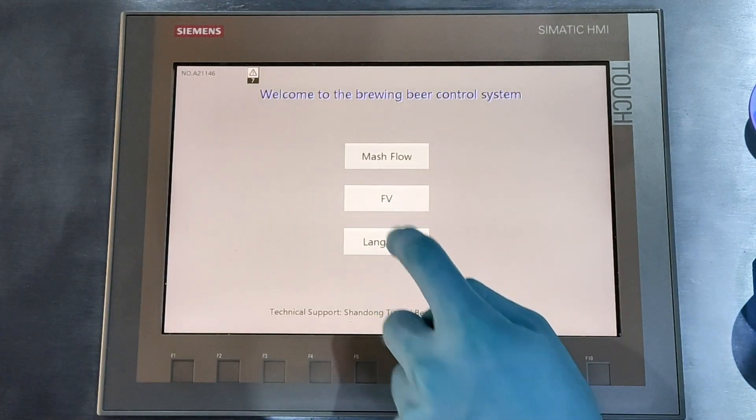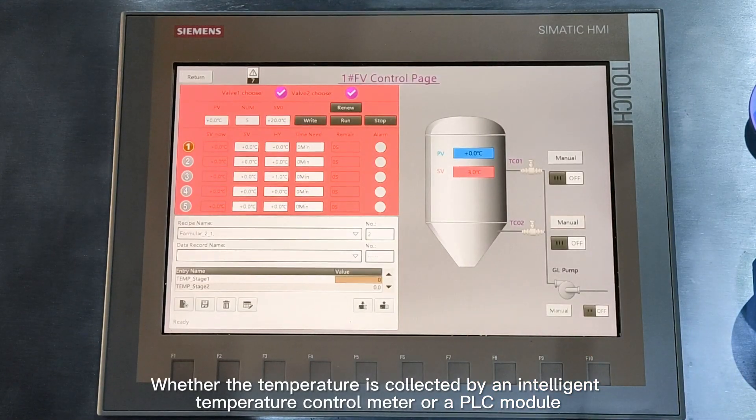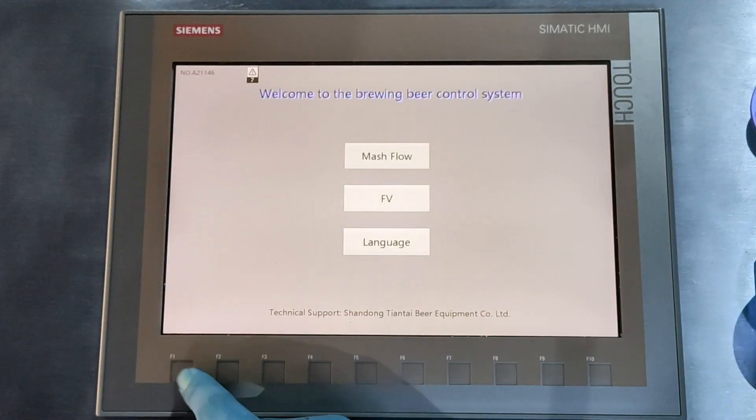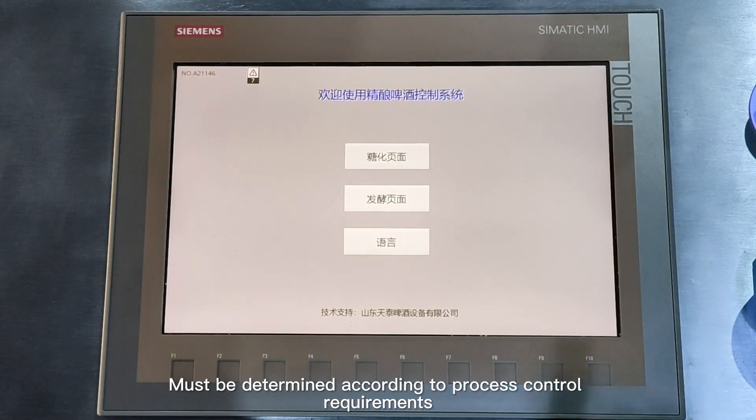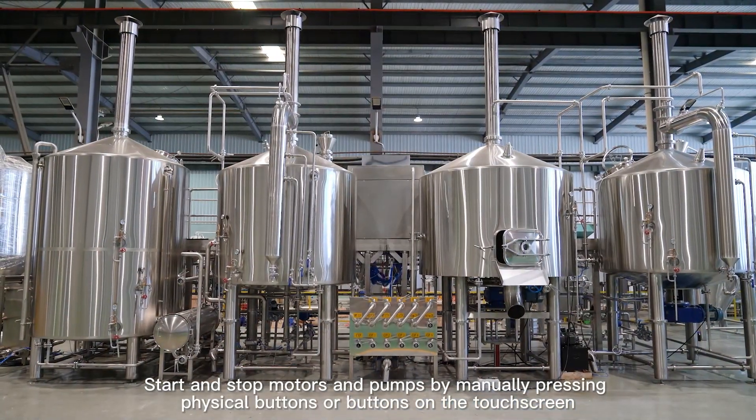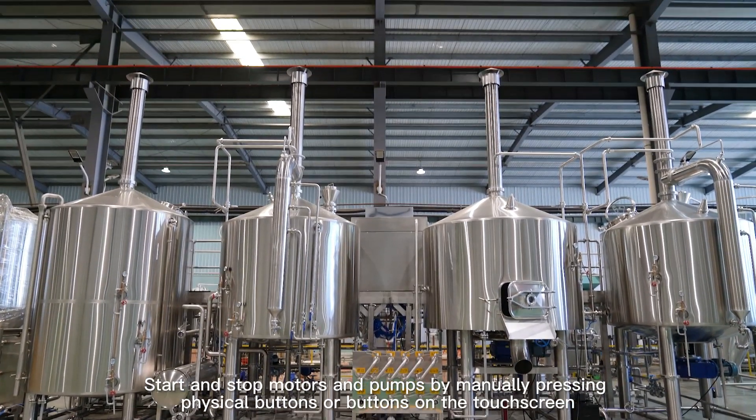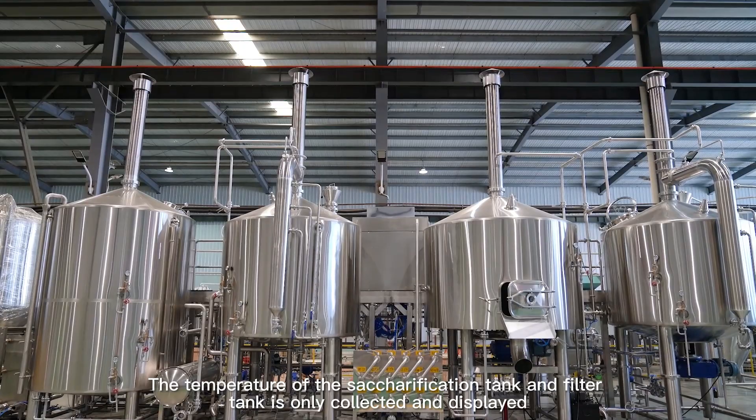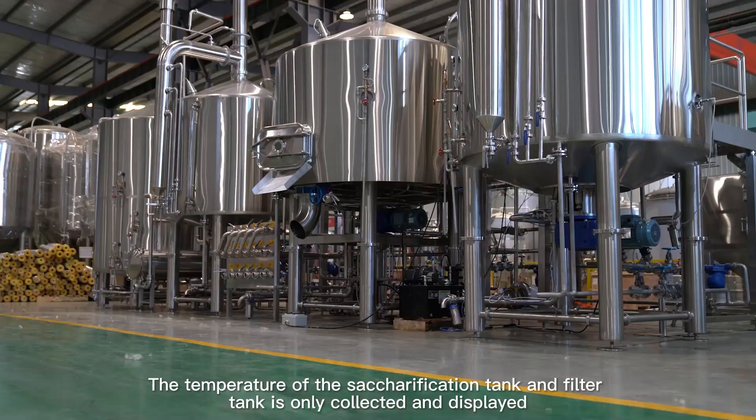Semi-automatic control: Whether temperature is collected by an intelligent temperature control meter or a PLC module must be determined according to process control requirements. Start and stop motors and pumps by manually pressing physical buttons or buttons on the touch screen. The temperature of the saccharification tank and filter tank is only collected and displayed without any processing.